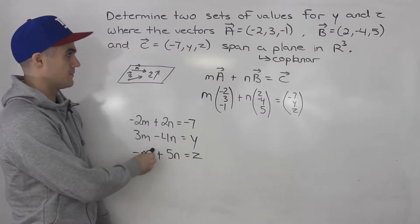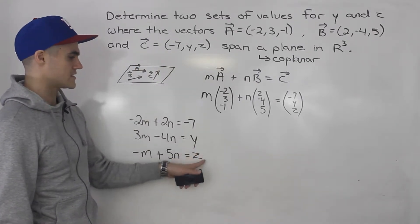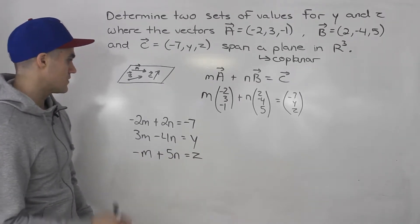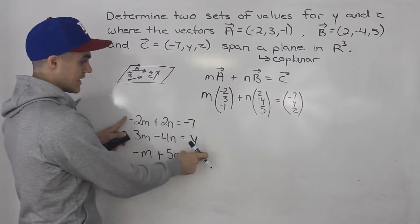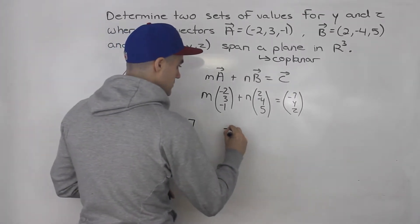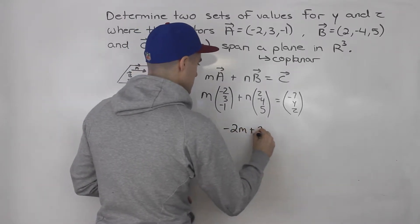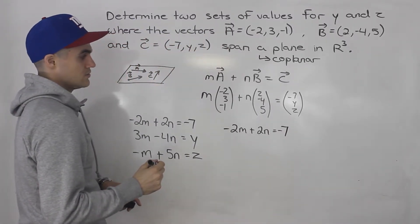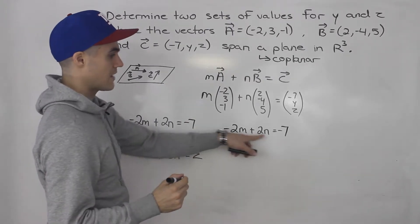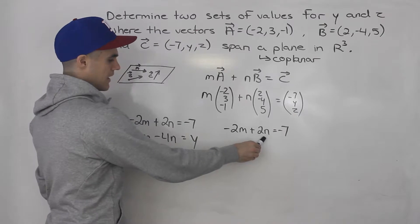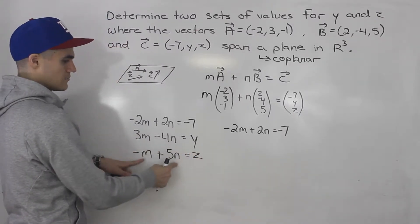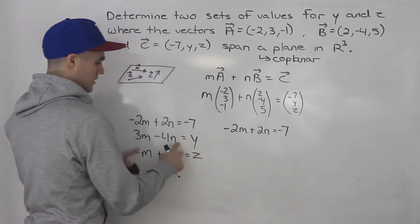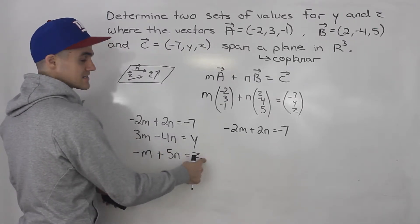Now that we have these three equations, we've got to determine two sets of values for y and z where these three equations are going to hold. The way you can do that is take this first equation that doesn't contain y and z, and pick values for m and n where this is going to hold. Then take those values for m and n, plug into the second equation and solve for y, plug into the third equation and solve for z. Then pick another set of values for m and n where this holds, plug in again, and get that second set for y and z.